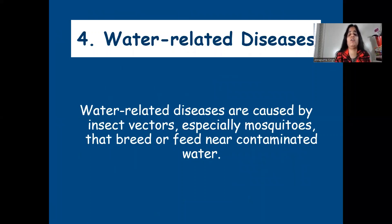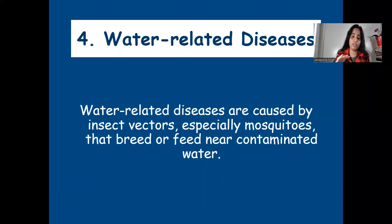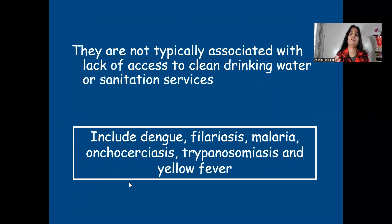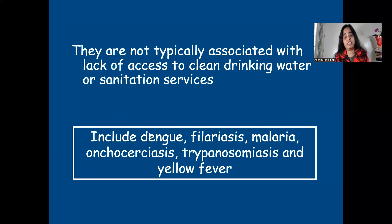Water-related diseases are caused by insect vectors, especially mosquitoes, that breed or feed near contaminated or stagnant water. These diseases are not caused by direct contact with water — instead, mosquitoes and flies breed in stagnant water nearby, then bite us and transfer the disease. Examples include filariasis and yellow fever. I will make a separate short video on each of these diseases.